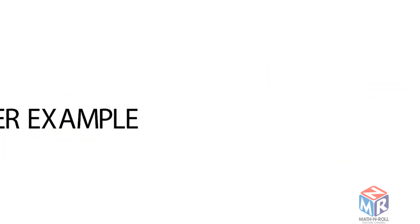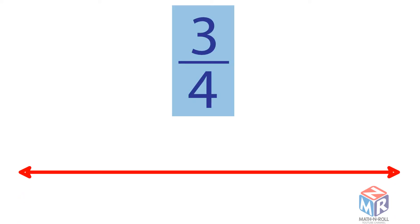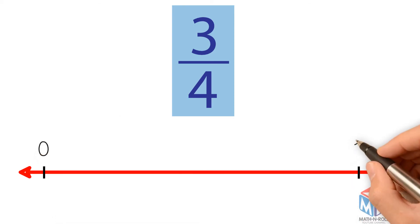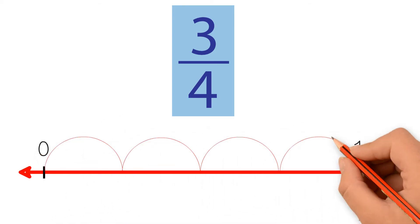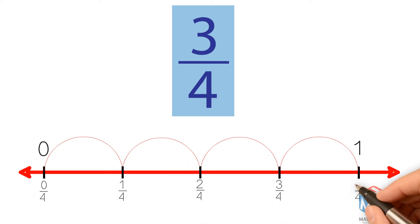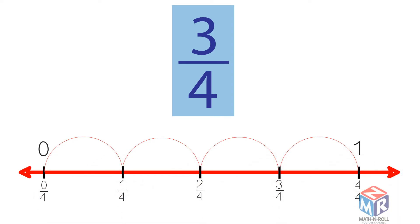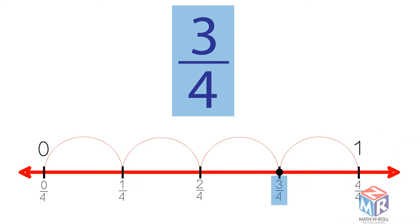Let's do another example. Locate 3/4 on the number line. Label a line from 0 to 1. Divide the line into 4 equal lengths, or fourths. 3/4 is 3 out of 4 equal lengths — a point at 3/4 represents the distance from 0 to 3/4.